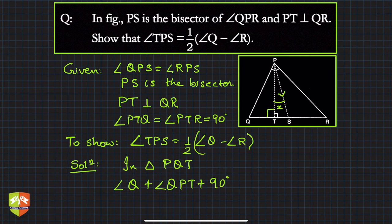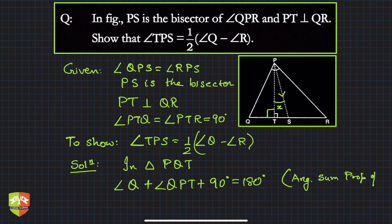∠Q + ∠QPT + 90 degrees, which is ∠T, is equal to 180 degrees. Angle sum property of a triangle, folks, you already know that. So what do I get? ∠Q + ∠QPT is equal to 90 degrees.